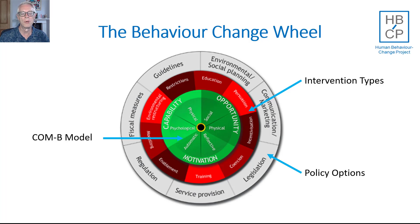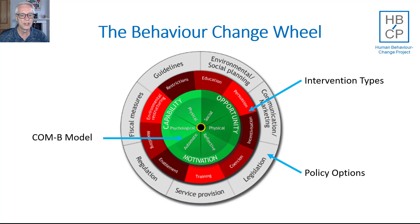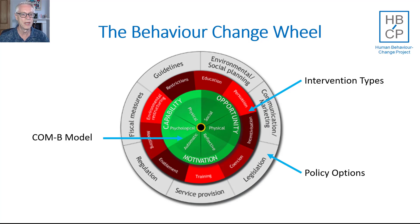These policy options are the ways in which you implement the intervention types such as education. For example, you could use communication or marketing to educate, or you could use guidelines, or provide a service such as the education service to educate. With coercion, for example, you could legislate so there are punishments for engaging in undesirable behaviours, or use communications and marketing to set up social norms which make the behaviours acceptable. So there will be a mapping from the intervention types to the policy options.